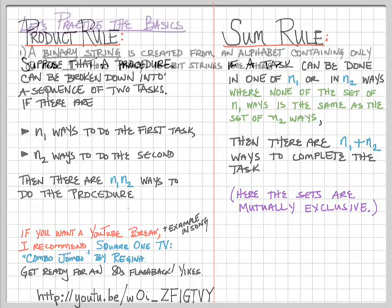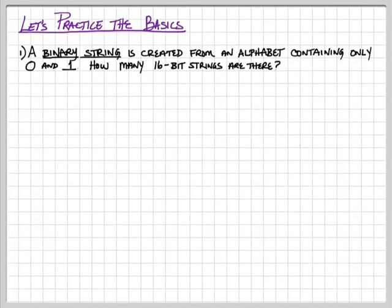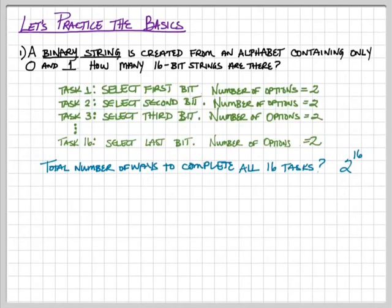A binary string is created from an alphabet that contains only 0 and 1. How many 16-bit strings are there? Well, let's write down what our tasks are. Task 1 is going to be to select what the first bit is. Is it 0 or is it 1? The number of options for task 1 is going to be 2.